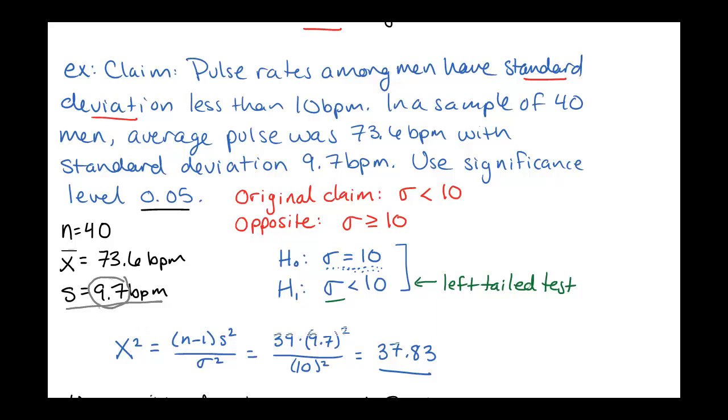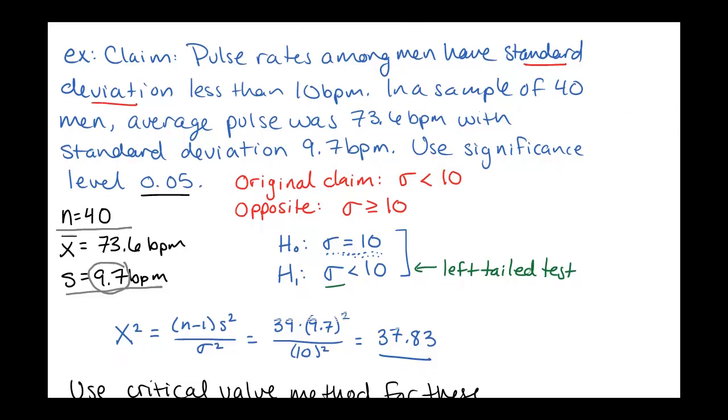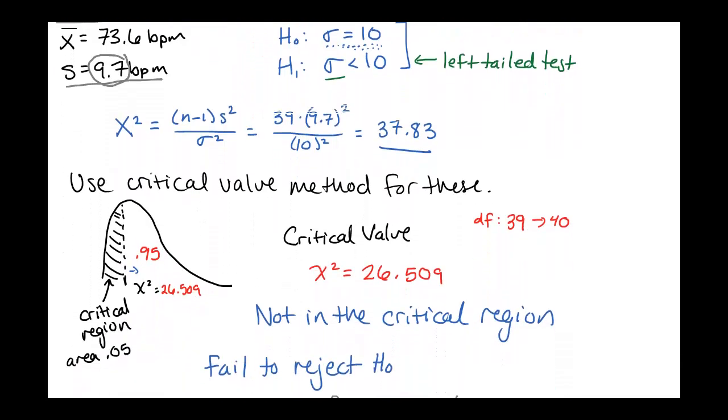If the sample had found a standard deviation a lot smaller, maybe like 5 beats per minute, then we probably would be able to support our claim. Or if our sample size had been bigger, we probably would have been able to support our claim. But as it stands, this is not enough evidence to say yes, we think that the standard deviation is less than 10. It might be, but we can't conclude that here.